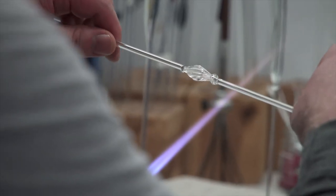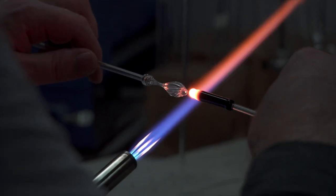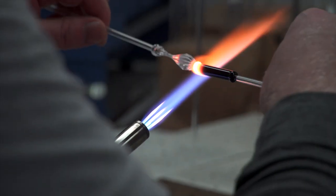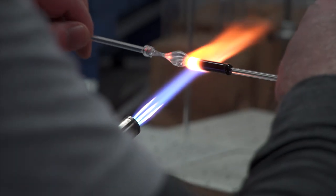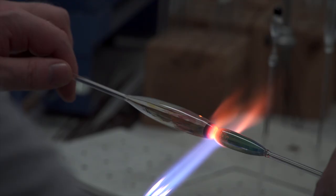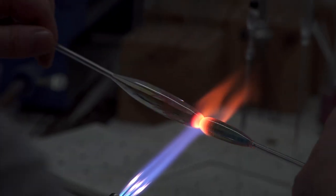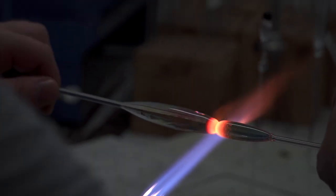He works the nib in the flame to give it a little bit of a twist. Attaches the black glass that is the base of the nib. Works the blue glass that's part of the section. And then attaches that blue glass that he worked as a section onto the handle that he made earlier.